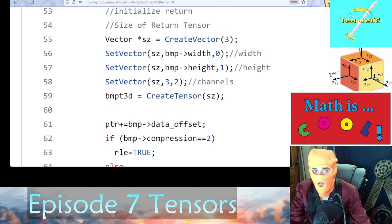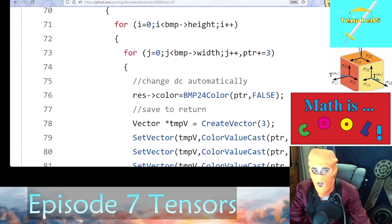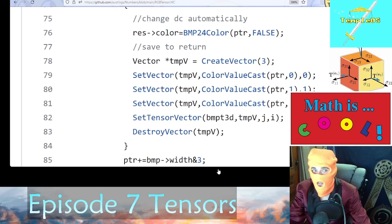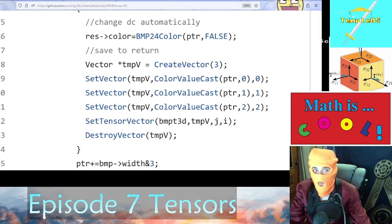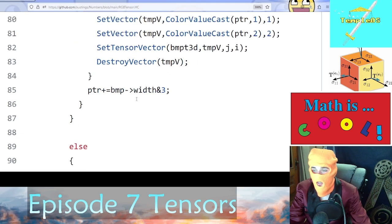We create a new tensor, and if it's a 32-bit or 24-bit BMP, then it has that structure that I just showed you earlier, so we are able to read it. We loop through the height and width.